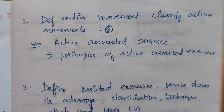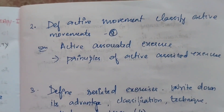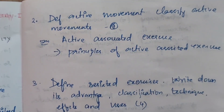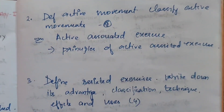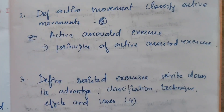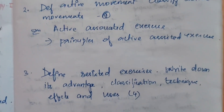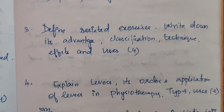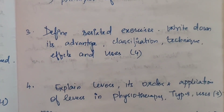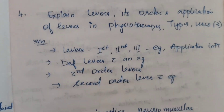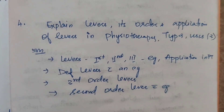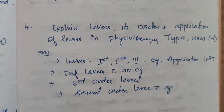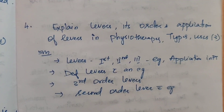Second topic: define active movement, classify active movements — this question appears 2 times. In 5-mark questions: active assisted exercise, principles of active assisted exercise. Third topic: define resisted exercises, write down advantages, classification, techniques and uses — appears 4 times in 15-mark questions. Fourth topic: explain levers, their orders and application of levers in physiotherapy, types and uses — appears 3 times in 15-mark questions and in 5-mark questions.